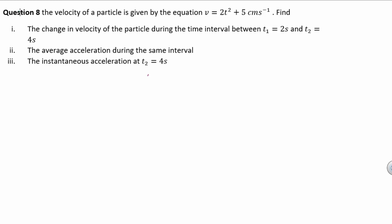Our eighth question: the velocity of a particle is given by the equation v = 2t² + 5 cm per second. Find the change in velocity of the particle during the time interval between t1 = 2 seconds and t2 = 4 seconds. The second part asks for the average acceleration during the same interval, and the third part asks for the instantaneous acceleration at t2 = 4 seconds.